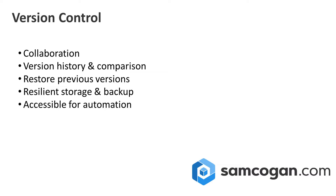Another benefit of version control is that it gets the files off your laptop and into a much more resilient storage location that is hopefully backed up, rather than the danger of your laptop getting broken or losing it. Finally, when we move on to testing and pipelines in the next videos, most of those things are going to be run in some sort of automation account or build tool. Those tools need to be able to access your ARM templates to run testing or a release pipeline. By moving them into a version control system, we have a central location where all those tools can access it. And if you're using a CI/CD tool like Azure DevOps, Jenkins, or GitHub, a lot of these things will have integrations between the source control system and the pipeline system, so it can even handle things like authentication for you.